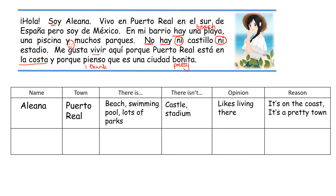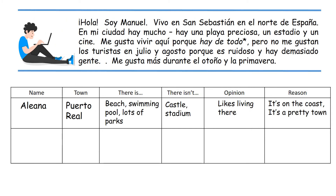You can give yourself points: one for Puerto Real, one for beach, swimming pool and lots of parks, one for castle and stadium, one for likes living there, one for it's on the coast, one for it's a pretty town — that's a score out of nine. Pause the video for the second text when you're ready.